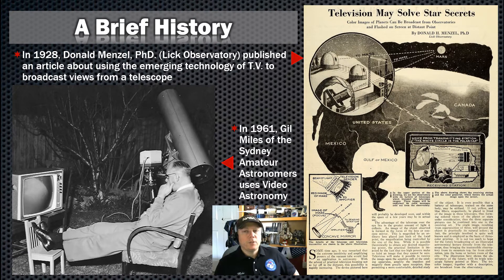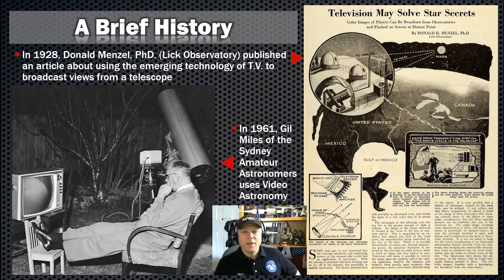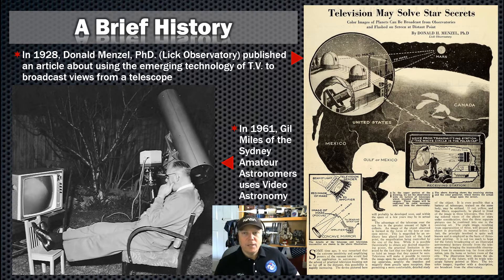Here we see a picture from 1961 of an amateur astronomer of the Sydney Amateur Astronomers. His name is Gil Miles, and you can see he's got what I would not say is a very compact camera connected to his telescope. He's got a very old-looking TV setup, providing most likely black and white television. What really gets me is just his attire for an evening of observing. But even back in 1961, you do have people trying to leverage video cameras and television for observing.